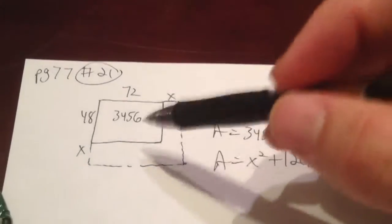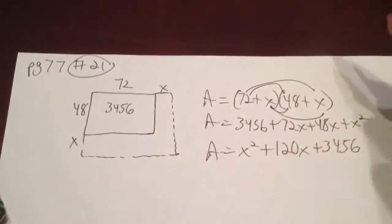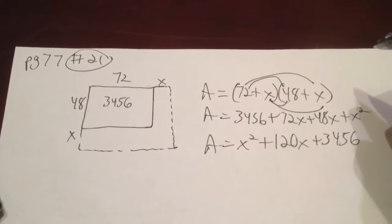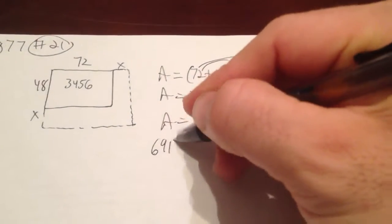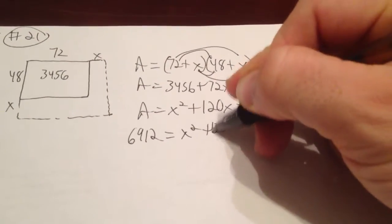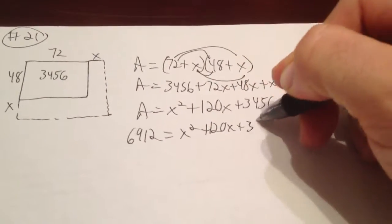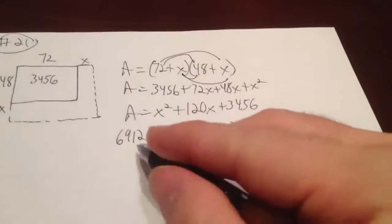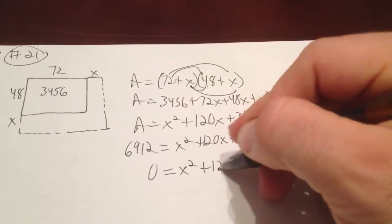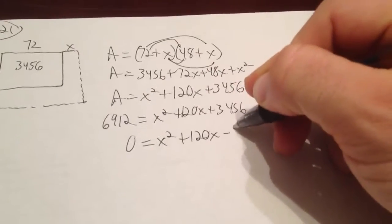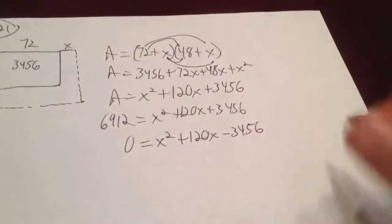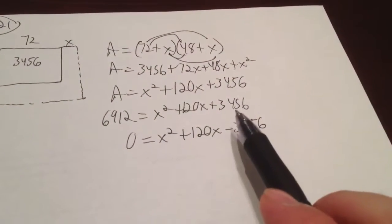What we want to know is when this area will be doubled. So if you double 3,456, you are going to get 6,912. They want to know when this will equal 6,912. So if you subtract the 6,912 over to the other side to set this thing equal to 0, most of you now are going to take this and you get negative 3,456 when you subtract 6,912 from this.